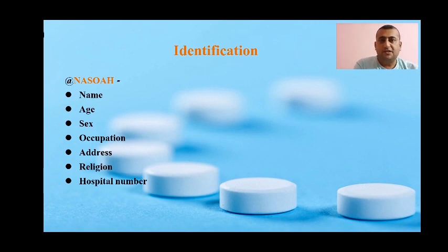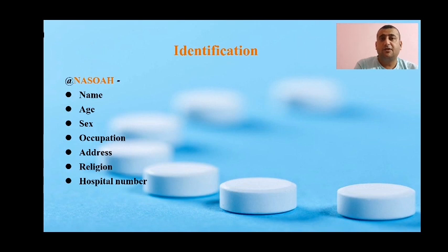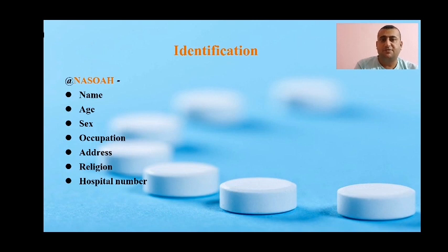In identification, we need to record name, age, gender, occupation, address, religion, hospital number, date of admission and date of examination. From the name we get a clue about the whereabouts of the patient — which country or region they belong to — and also a clue about religion. Addressing the patient by name helps develop a friendly environment for history taking.